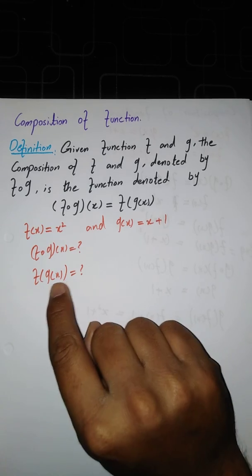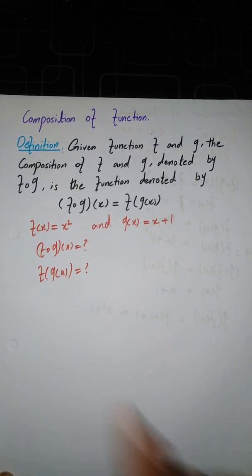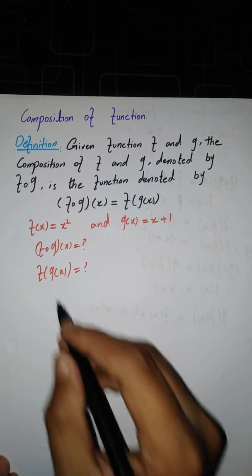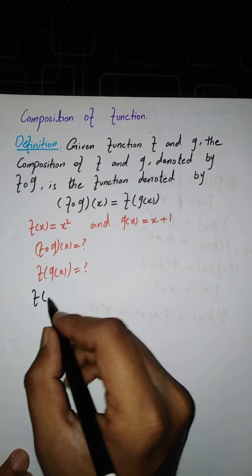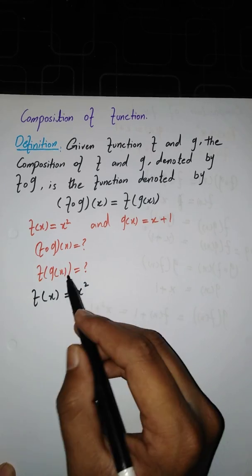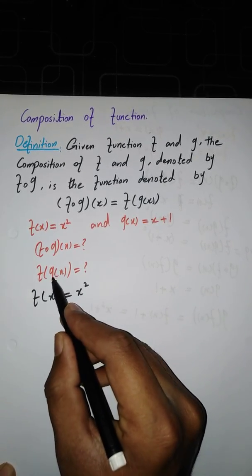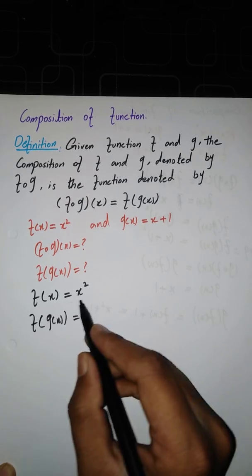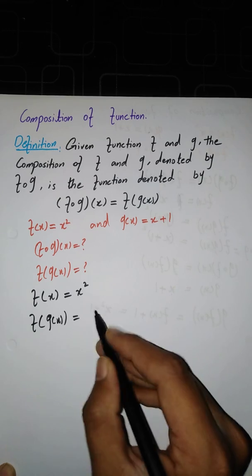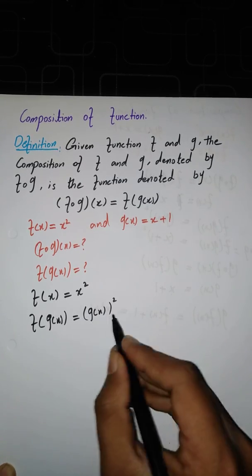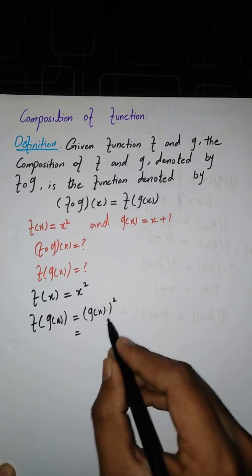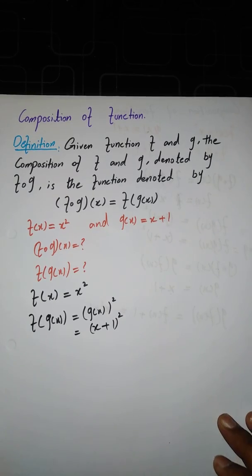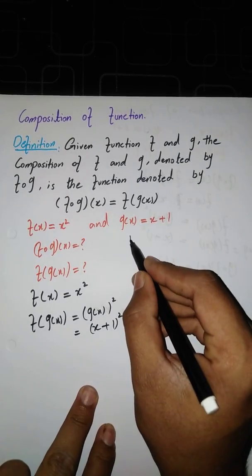To solve this, we take f(x) = x² and replace the independent variable x with the function g(x). So everywhere we see x, we replace it with g(x). Since g(x) = x + 1, we substitute to get f(g(x)) = (x + 1)². That is our result for f∘g.